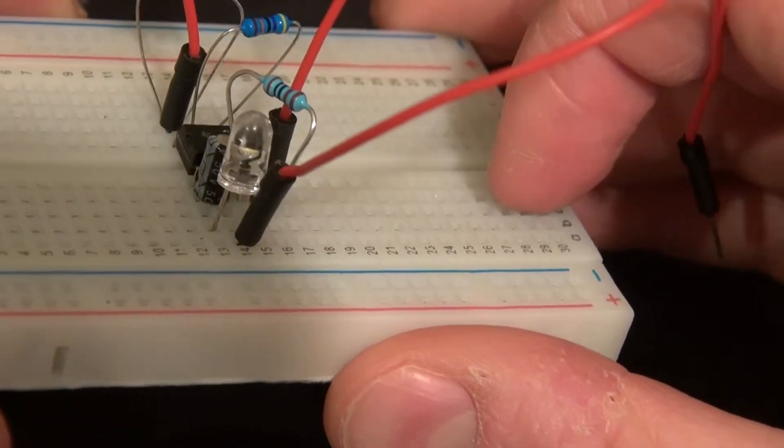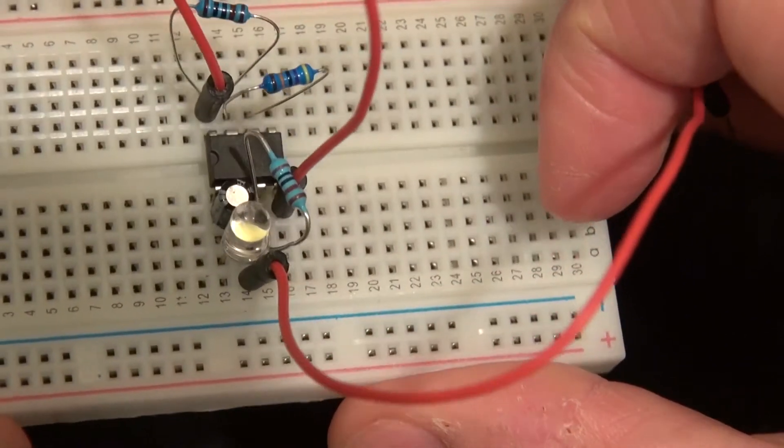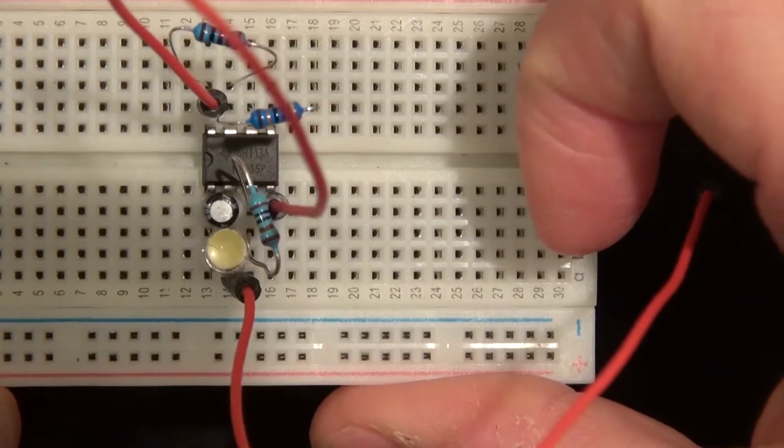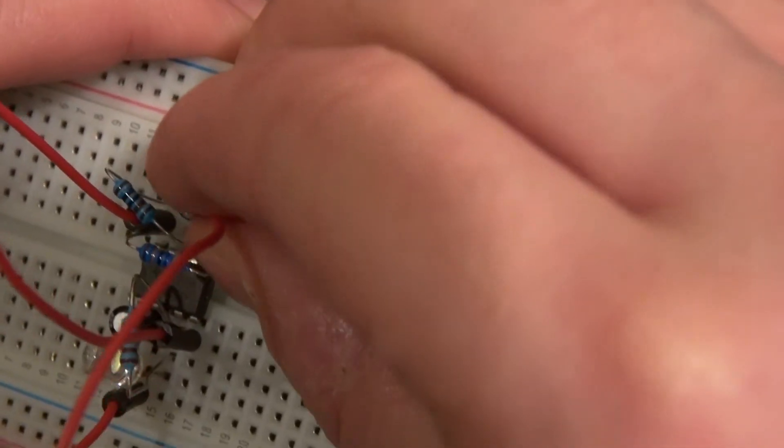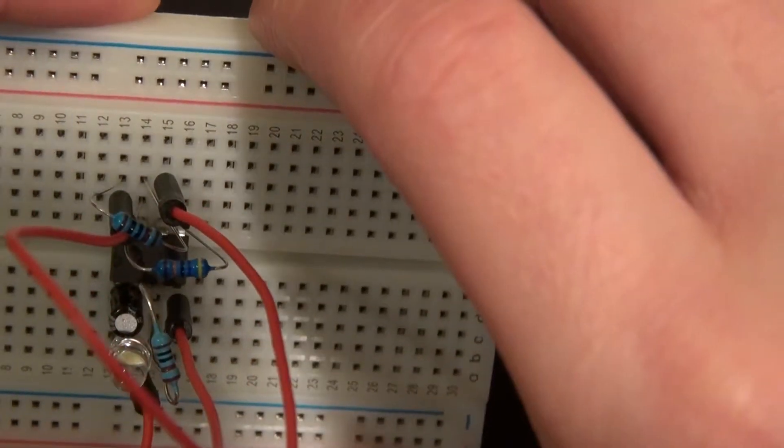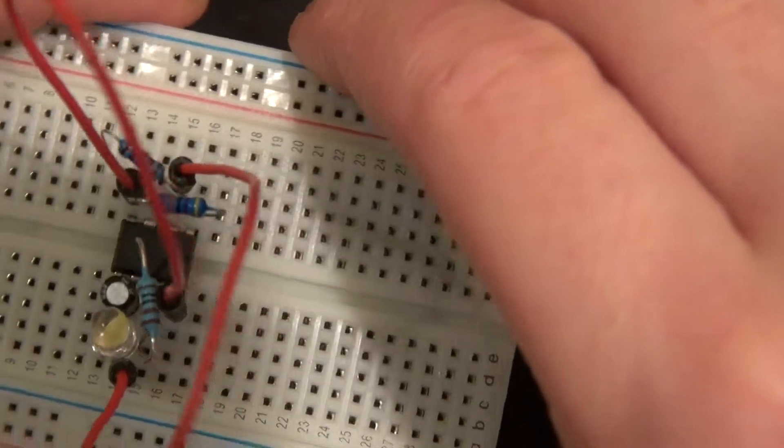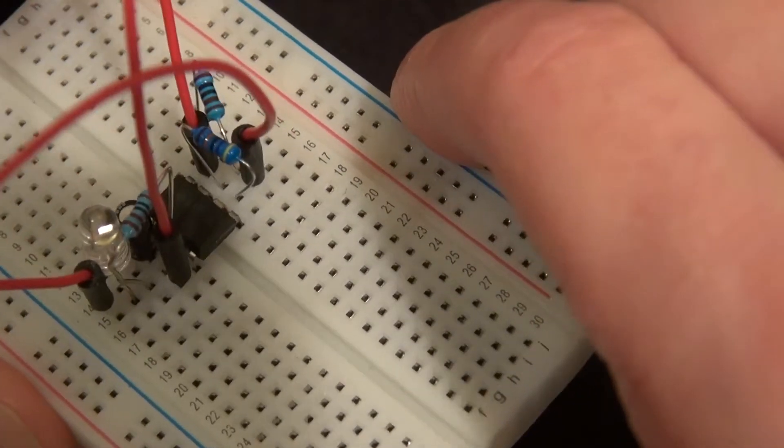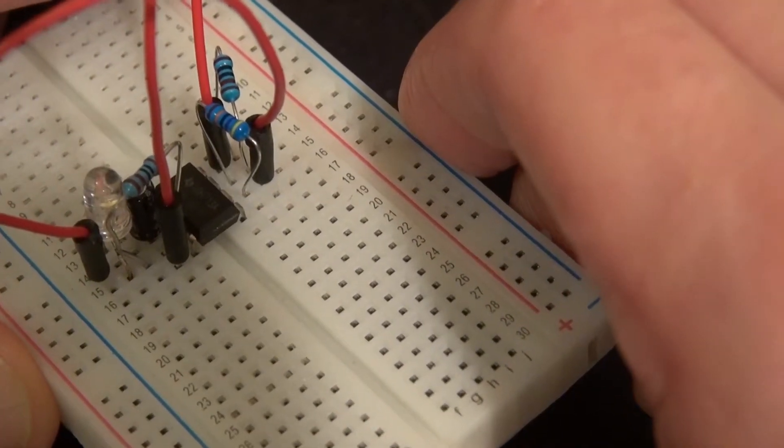Now take another jumper cable and connect it from pin 2 to pin 6. Pin 2 and 6 are connected.